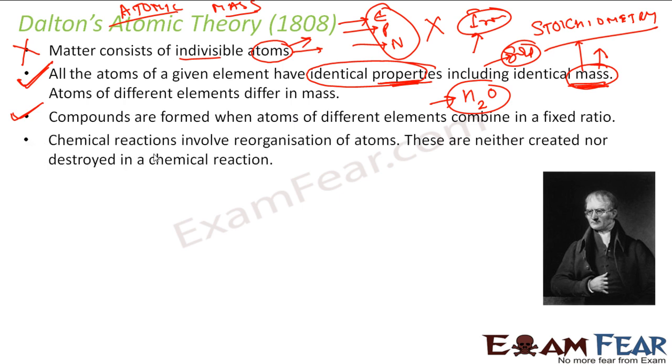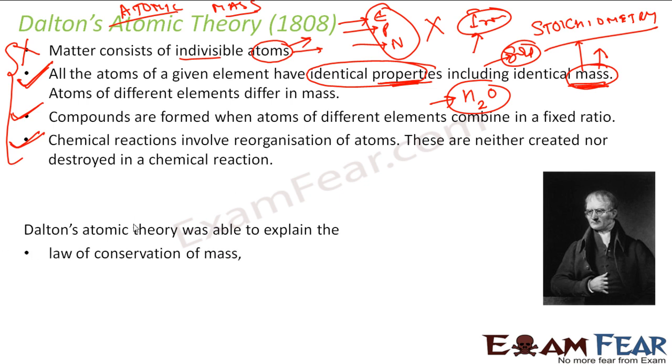Chemical reaction involves reorganization of atoms. These are neither created nor destroyed in chemical reaction. This is also correct. So if you see in any chemical reaction, the atoms are reorganized - they are not created nor destroyed. Dalton gave a theory in 1808, and out of four postulates, three were correct. The best part of Dalton atomic theory was this theory was able to explain the law of conservation of mass, the law of constant composition, and also law of multiple proportions.